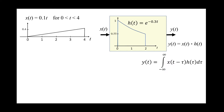I hope by the end of this video we will be able to visualize how the impulse response of the system processes the input as it enters the system and produces an output as time progresses. Hopefully, determining the limits of integration will not be a source of confusion. In system analysis we use convolution to find the output by convolving the input x(t) with the system impulse response h(t).